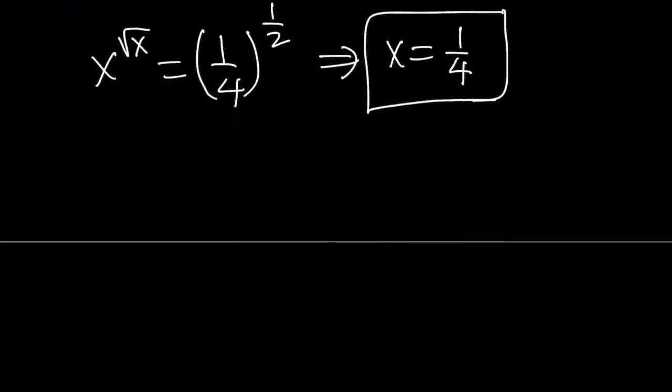Now, I'm going to manipulate the one fourth and write it this way. So, x to the power square root of x is equal to one fourth to the power one half. And I'm going to write the one fourth as, well, I'm not going to write the one fourth as something. So, here's what I'm going to do.